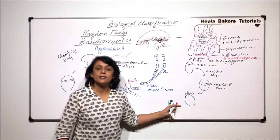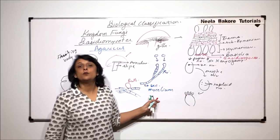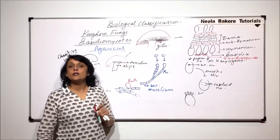Whereas, in case of baesidiomycetes, the number of ascospores is always four.